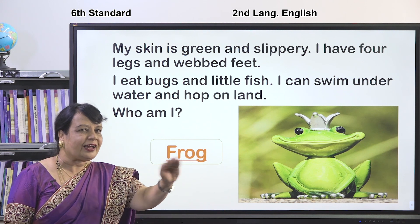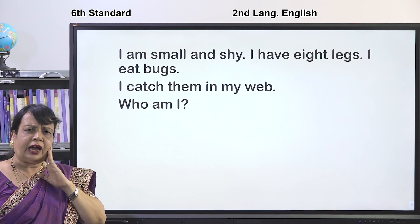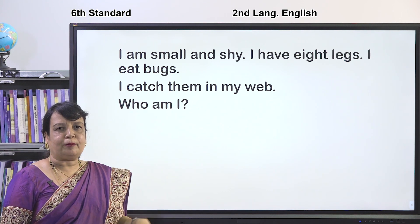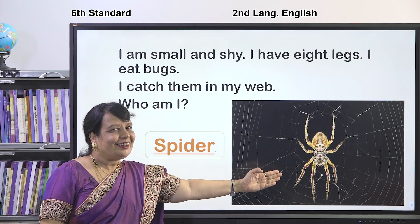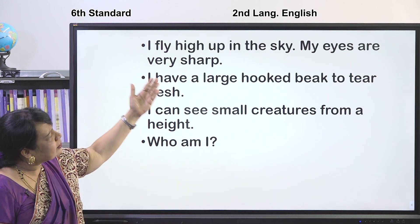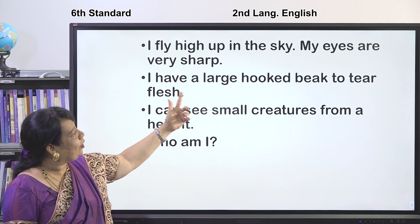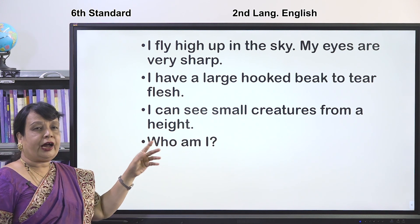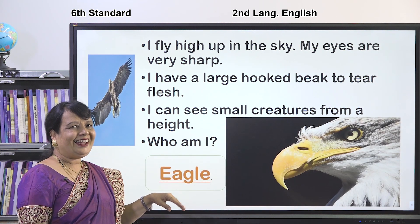Riddle 3: I am small and shy, I have eight legs, I eat bugs, and I catch them in my web. Who am I? It is the spider! Riddle 4: I fly high up in the sky, my eyes are very sharp, I have a large hooked beak to tear flesh, and I can see small creatures from a height. Who am I? It is the eagle!